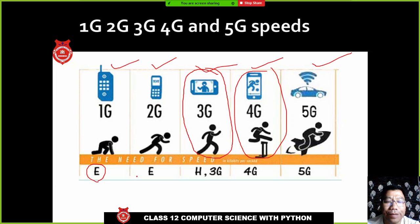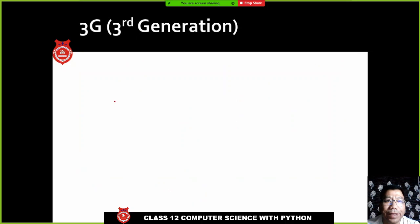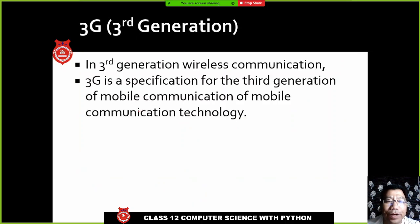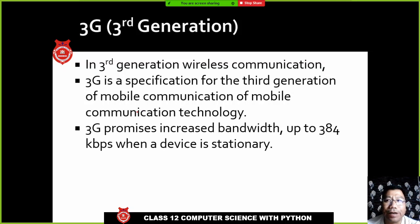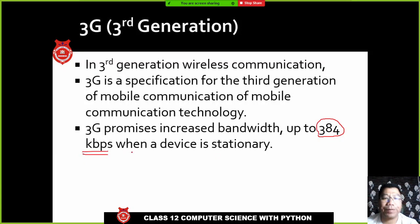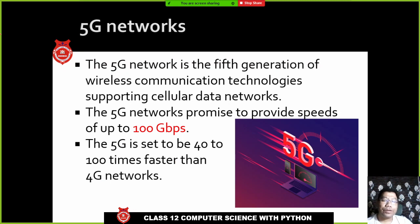When you see 'E' on your device, that means EDGE connection. When you see 'H', that is HSPA connection. In third generation (3G) wireless communication, there is an increase in bandwidth and speed. The speed is usually 384 kbps when the device is stationary in one location.